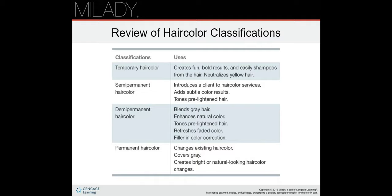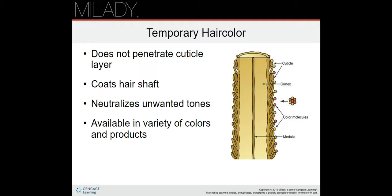Temporary hair color does not penetrate the cuticle layer — it just coats the hair shaft. It usually doesn't have developer in it and isn't strong enough to open the cuticle layer, so it just sits on the outside of the hair. The good part is it doesn't cause any damage. It neutralizes unwanted tones and is available in a variety of colors and products.